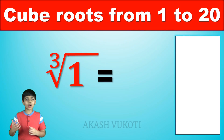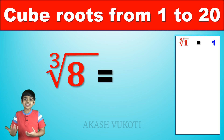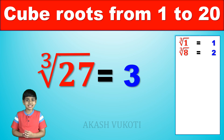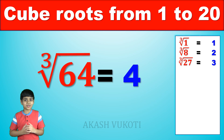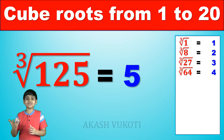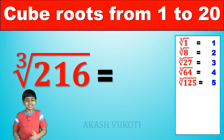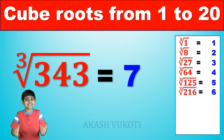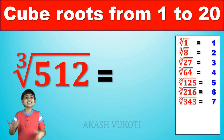The cube root of 1 is 1. The cube root of 8 is 2. The cube root of 27 is 3. The cube root of 64 is 4. The cube root of 125 is 5. The cube root of 216 is 6. The cube root of 343 is 7.